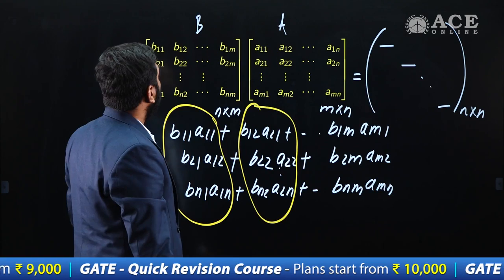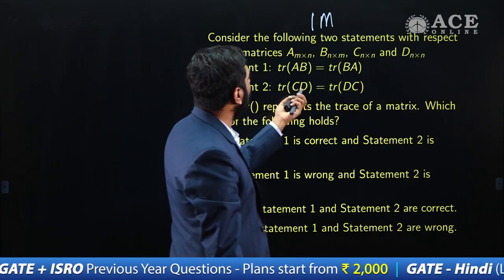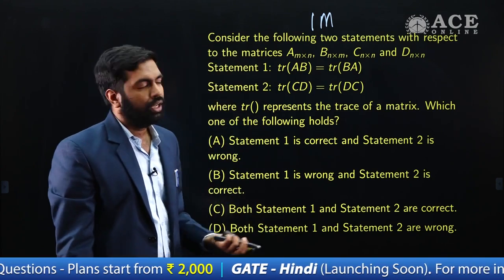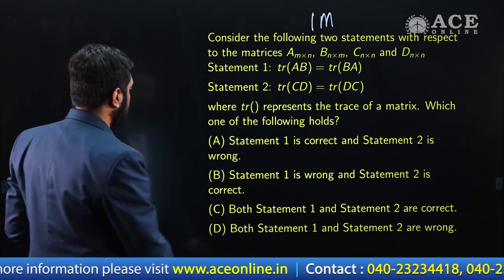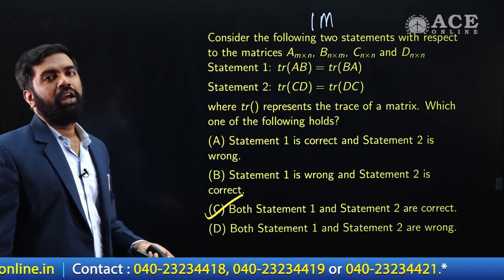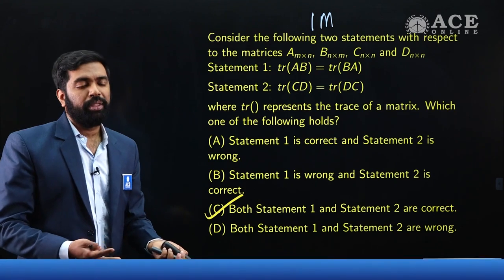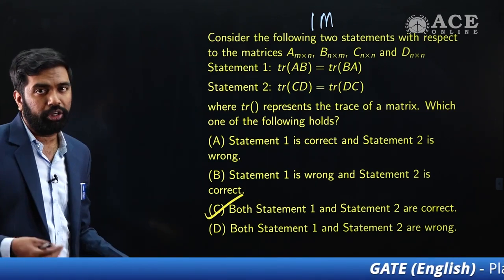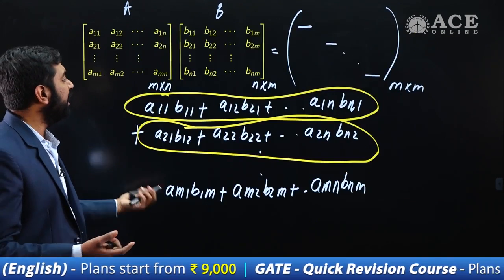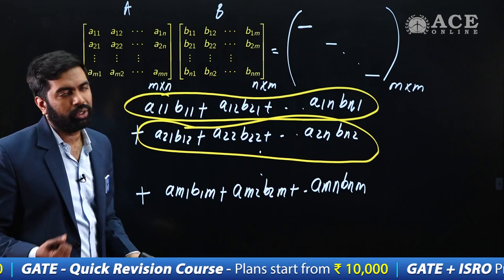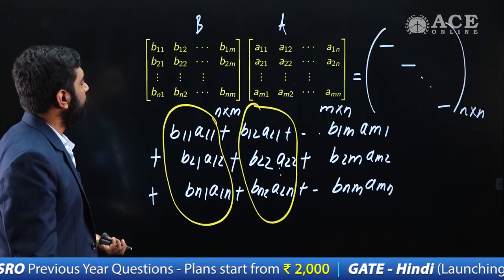This is true for A of order M×N and B of order N×M. As a special case, when C and D have the same order, this still works. Therefore the answer is both statements are true, which is option C. The property trace(AB) = trace(BA) is what we usually teach in class. In the exam, if you already know this it takes a fraction of a second — or you can take specific matrices A and B and verify.